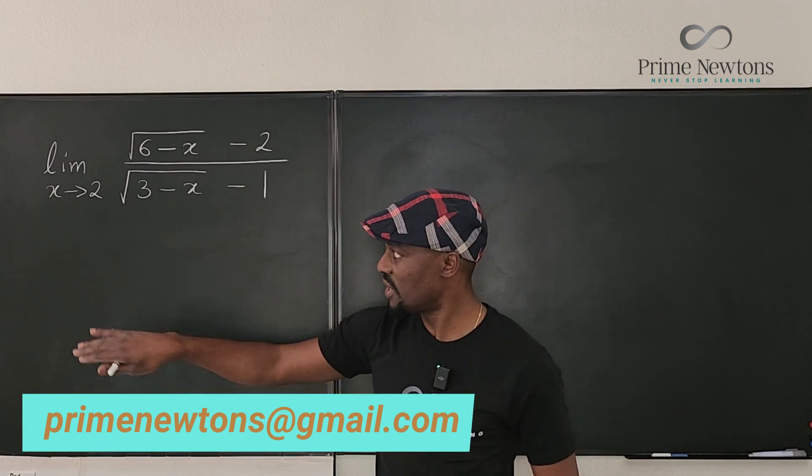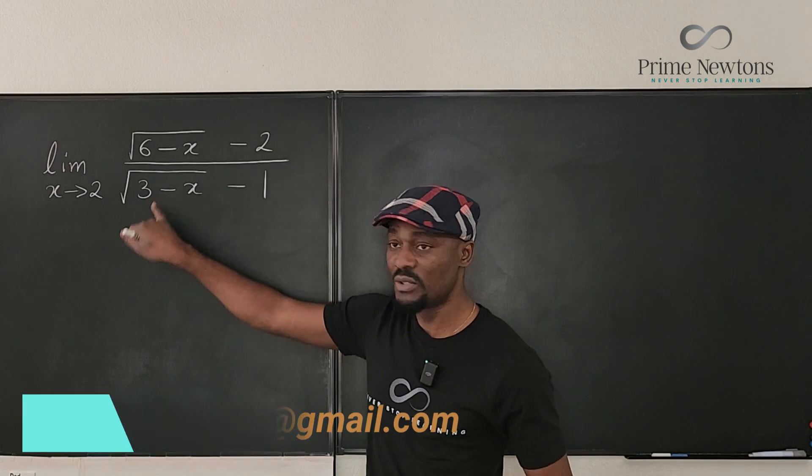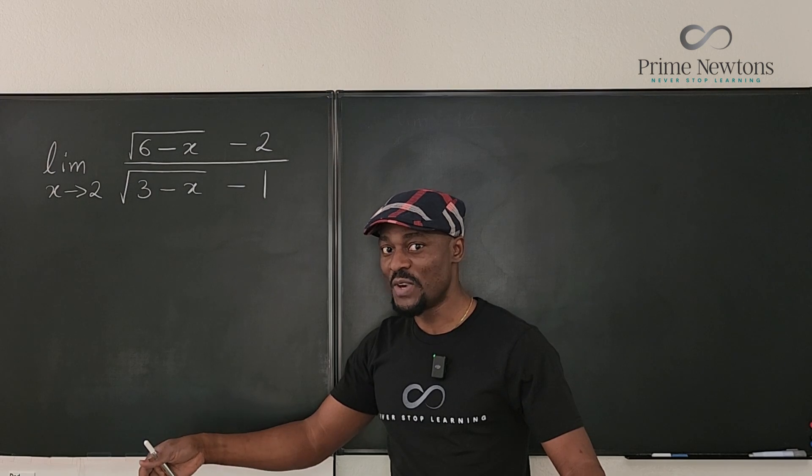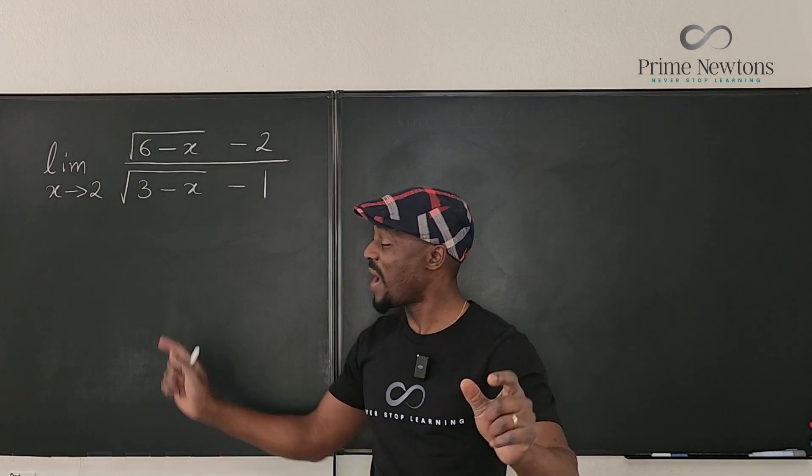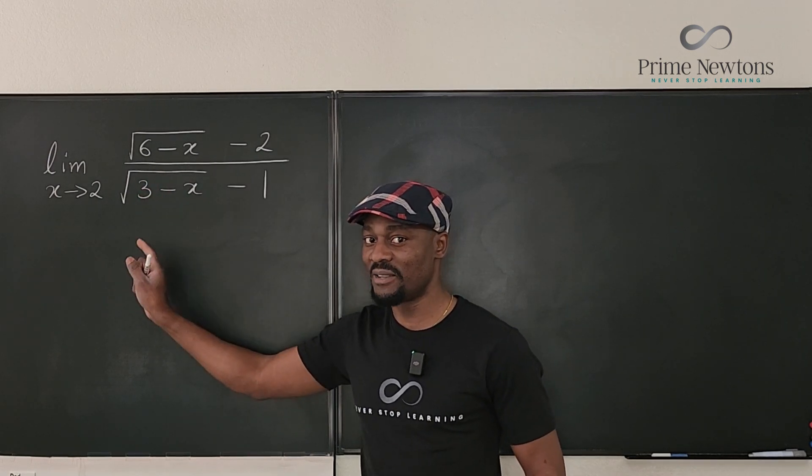We go to the denominator and we plug in 2. We're going to end up with 3 minus 2, which is 1. The square root of 1 is 1. 1 minus 1 is 0. Now that's a problem. So now you have 0 over 0 in a radical function, and you're trying to take the limit, and both of them have radicals.